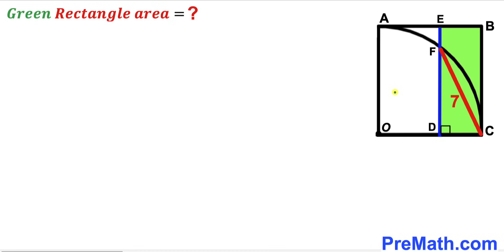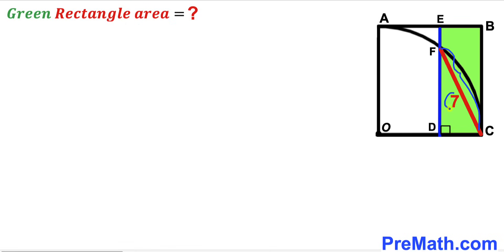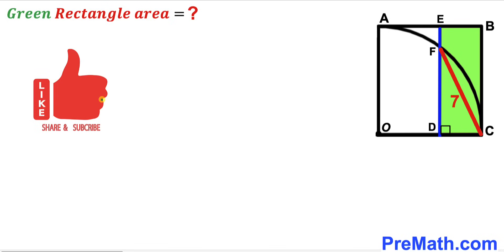Welcome to Pre-Math. In this video we have a quarter circle with center O fully inscribed in a square ABCO, as shown in the diagram. We have a perpendicular ED, resulting in the green shaded rectangle EBCD. Furthermore, chord FC is seven units long, and our task is to calculate the area of this green shaded rectangle EBCD.